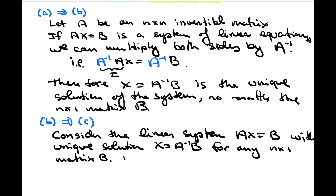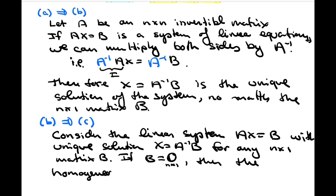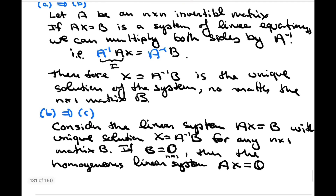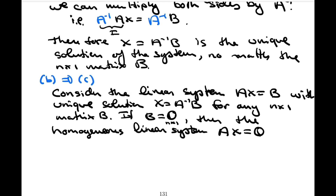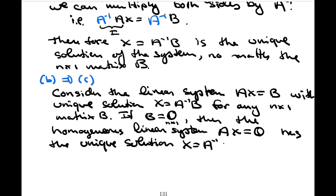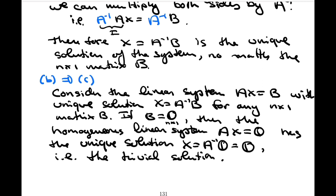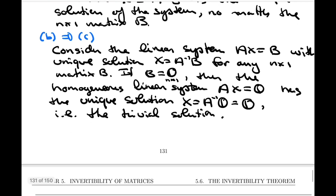For any n by one matrix b, if b is equal to the zero matrix — which is still n by one — then the homogeneous linear system ax equals zero would have the unique solution x equals a inverse times b. But since b is the zero matrix, this equals zero, i.e., the trivial solution. And that completes the proof of b implies c.